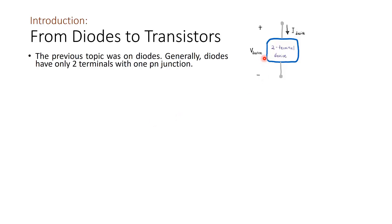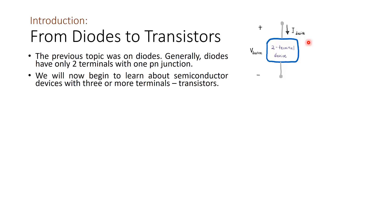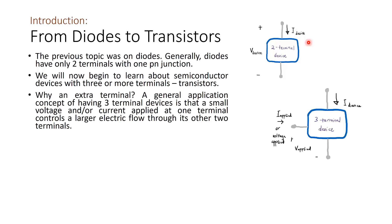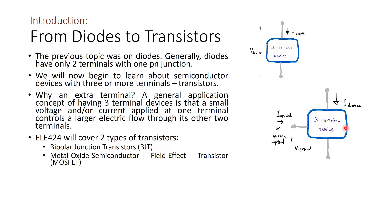We will now begin to learn about semiconductor devices with 3 or more terminals — that is, transistors. With 3 terminals, a small voltage and/or current applied at one terminal controls a larger electric flow through the other 2 terminals. ELE 424 will cover two types of transistors: the Bipolar Junction Transistor (BJT) and the Metal Oxide Semiconductor Field Effect Transistor (MOSFET).